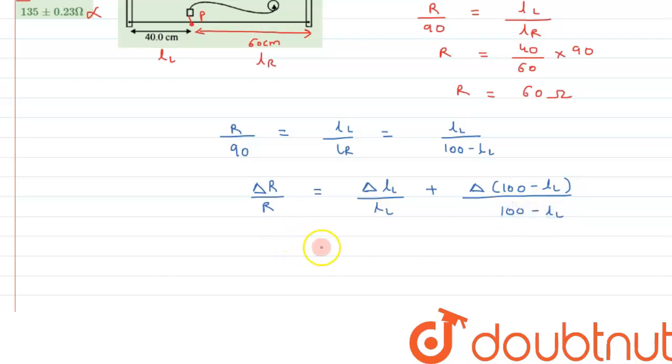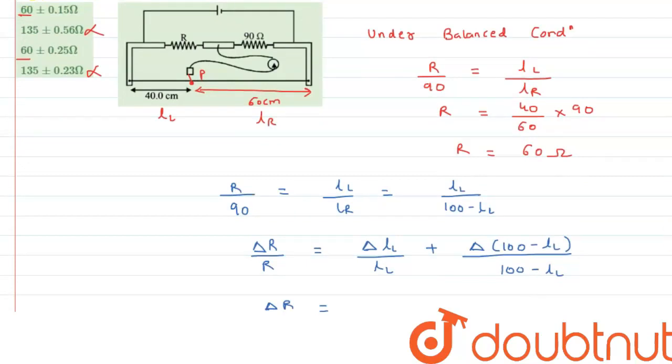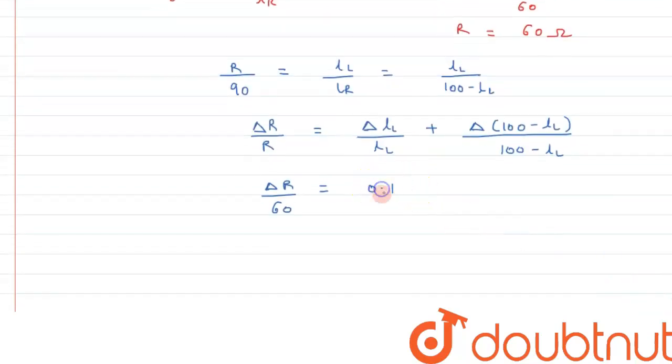Delta R by R where R is 60. Delta LL, that is the least count of the scale, has been given as 1 mm, so in terms of centimeter it can be written as 0.1.